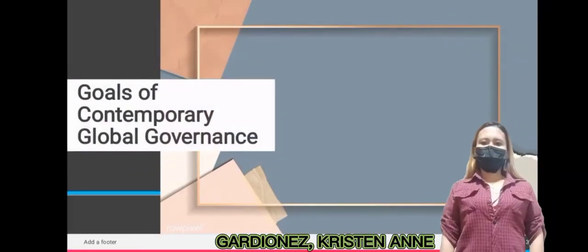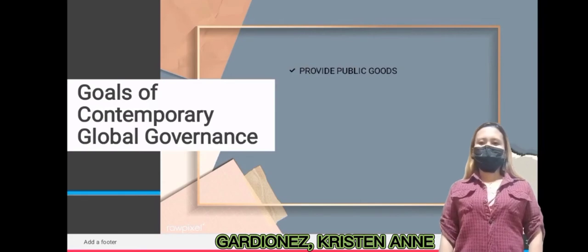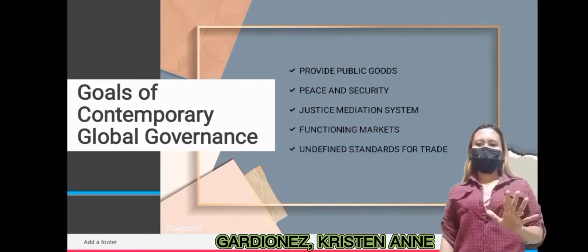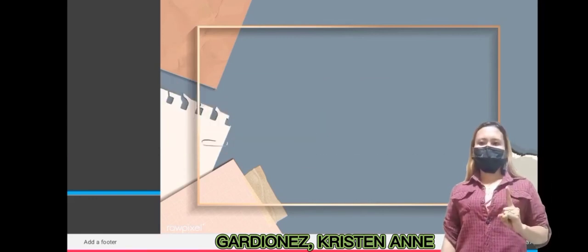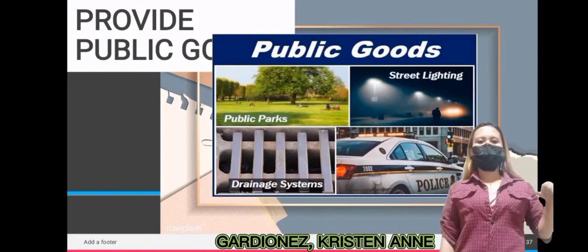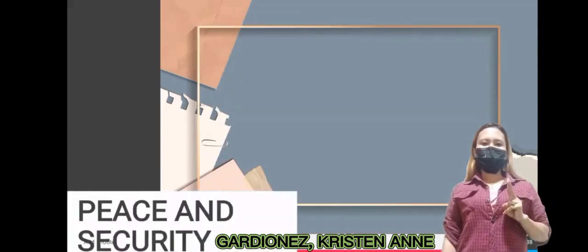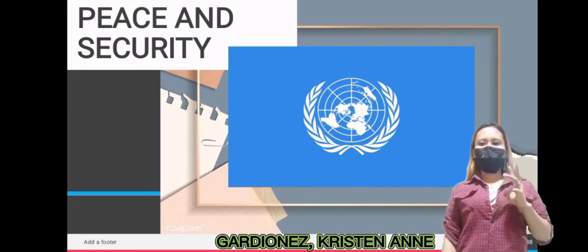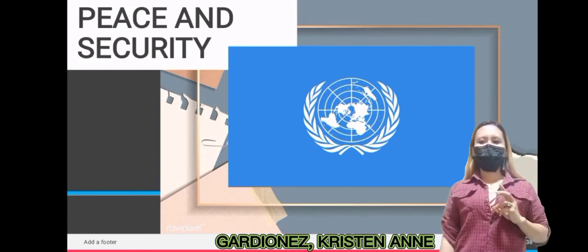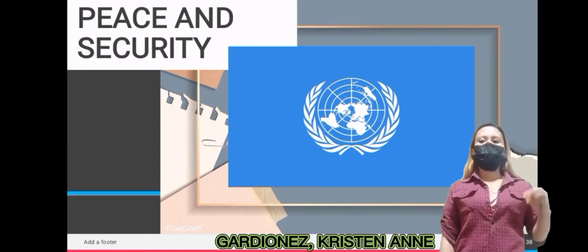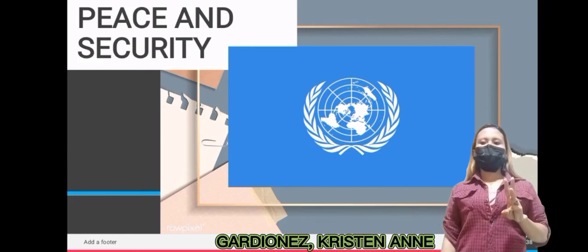The goals of contemporary global governance include: to provide public goods; to have peace and security; to have a justice mediation system; for functioning markets; and to define unified standards for trade. Regarding peace and security: since the UN's creation on October 24, 1945, the United Nations has been called upon to prevent disputes from escalating into war, help restore peace following armed conflict, and promote lasting peace in societies emerging from war.